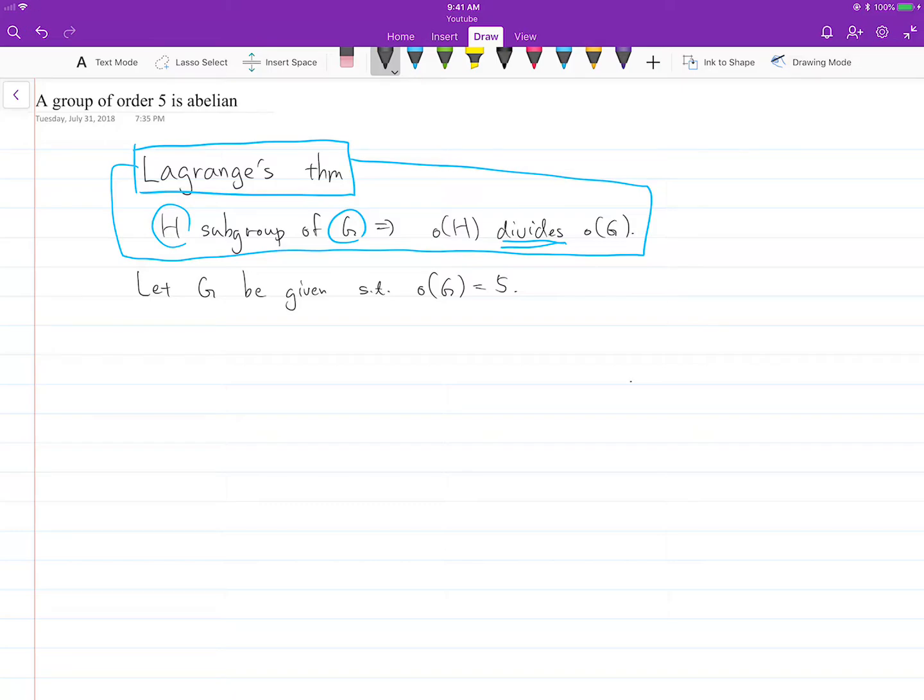What we're going to do is take an element X in G such that X is not the identity element, and create a cyclic group generated by X.